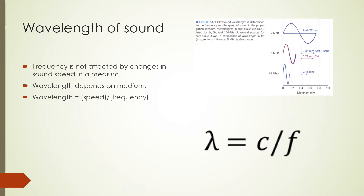The difference in speed of sound at tissue interfaces is used to generate echoes in ultrasound imaging. When ultrasound travels from one medium to another, the speed of the sound changes but the frequency remains the same. Once we know the speed of sound in a medium and the frequency, we can calculate wavelength. For soft tissue with a speed of 1540 m/s and a frequency of 5 MHz, the wavelength is about 0.31 mm.